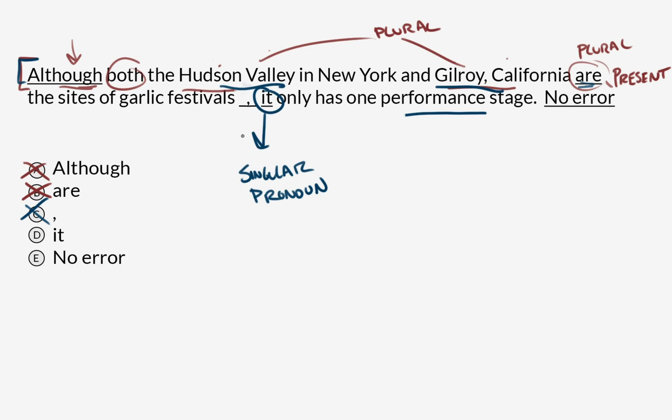But that pronoun ambiguity—since it's a singular pronoun which could have multiple possible antecedents (it could be the garlic festival in the Hudson Valley or the garlic festival in Gilroy)—this is our answer.